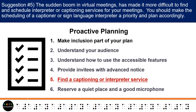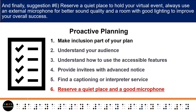Suggestion number five: the sudden boom in virtual meetings has made it more difficult to find and schedule interpreter or captioning services for your meetings. You should make the scheduling of a captioner or sign language interpreter a priority and plan accordingly. And finally, suggestion number six: reserve a quiet place to hold your virtual event, always use an external microphone for better sound quality, and a room with good lighting to improve your overall success.